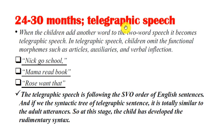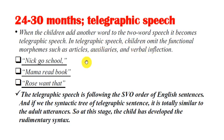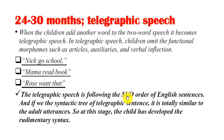The third stage in the acquisition of syntax is telegraphic speech. This stage occurs when the child is about 24 to 30 months old. When the child adds another word to the two-word speech it becomes telegraphic speech. In telegraphic speech, children omit functional morphemes such as articles, auxiliaries, and verbal inflections. For example: 'Nick go to school,' 'mama read book,' 'Rose want that.' These telegraphic sentences follow subject-verb-object order.